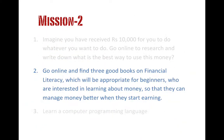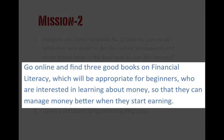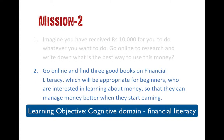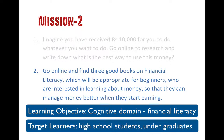Let's look at our second case: go online and find three good books on financial literacy which will be appropriate for beginners who are interested in learning about money so that they can manage money better when they start earning. Our learning objective is still a cognitive one — learning a life skill, namely financial literacy — and our target audience is students who could be high school level or undergraduates.